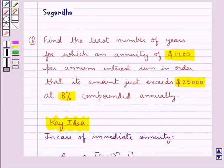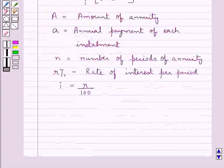In the question, we are asked to find the least number of years, that is we have to find N. We are given that the annuity is of $1200 per annum. The amount is also given to us and also the rate of interest is also given to us. Let's proceed with the solution now.